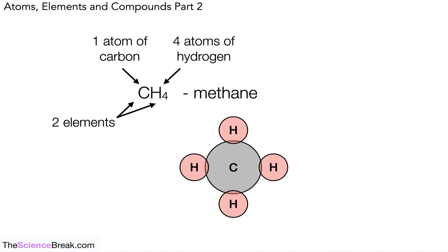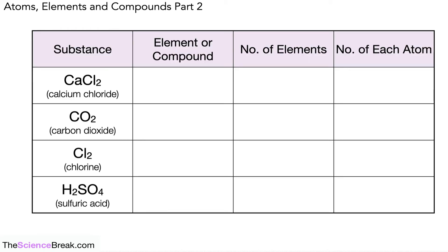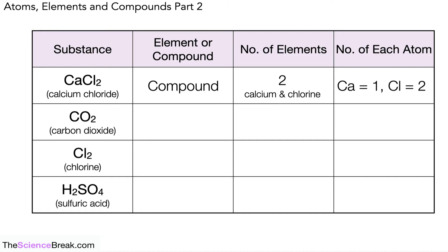We can now do some practice working out the number of elements and atoms. The first example is calcium chloride, which we've already done — two elements, calcium and chlorine; one atom of calcium and two atoms of chlorine. Why don't you pause here and have a go at the last three examples?